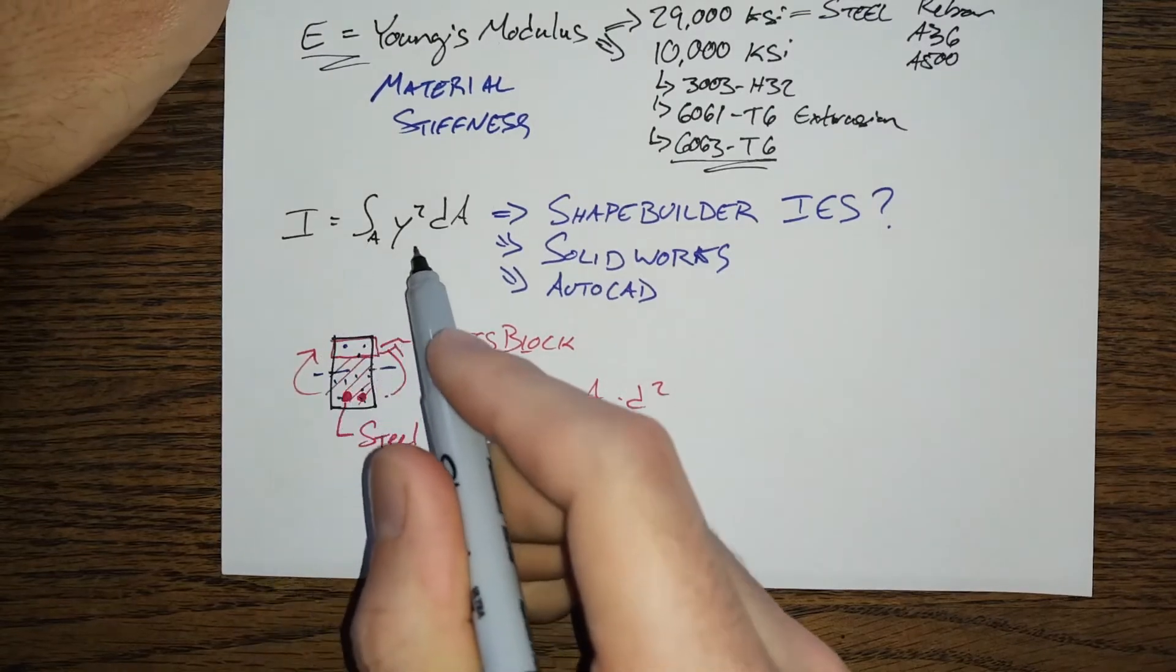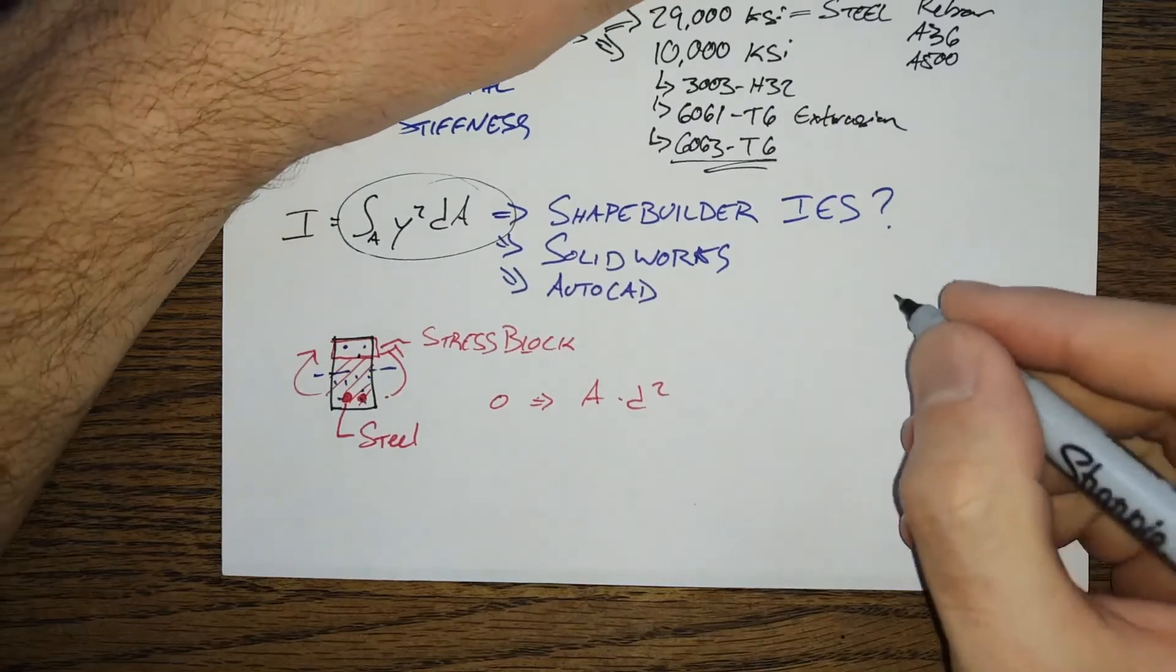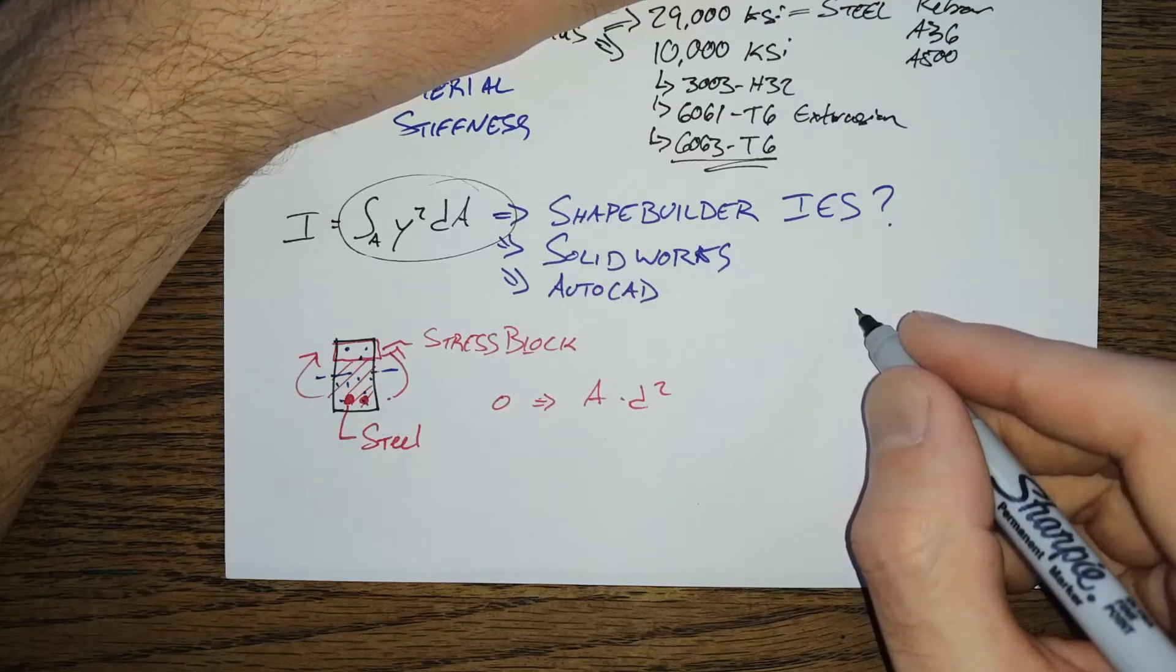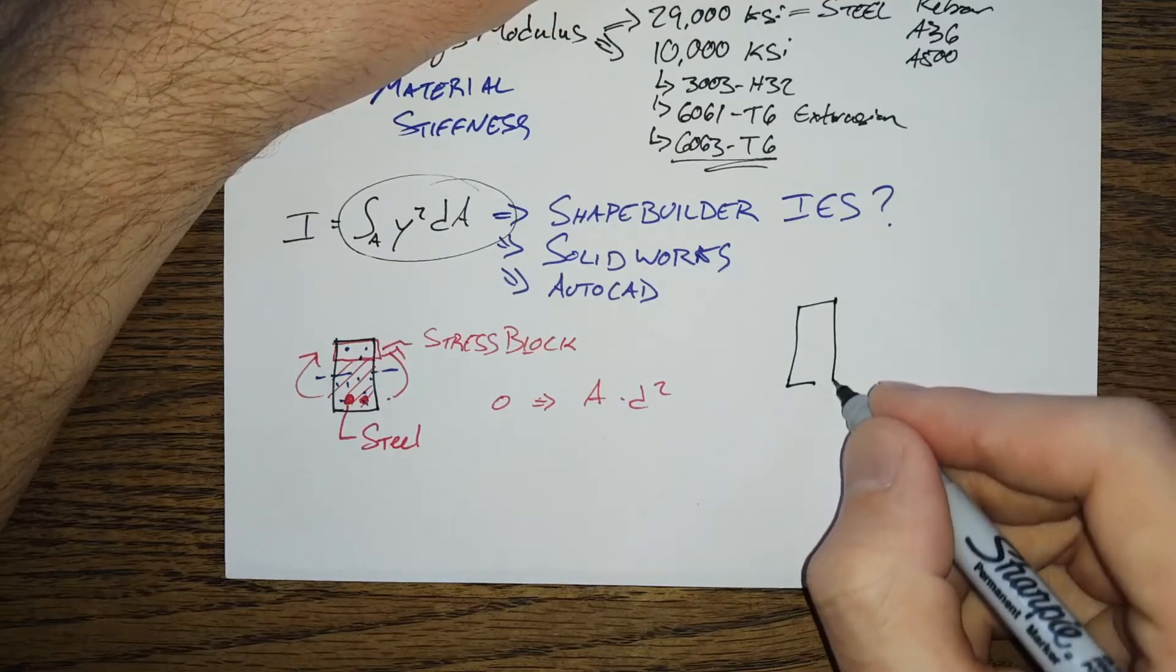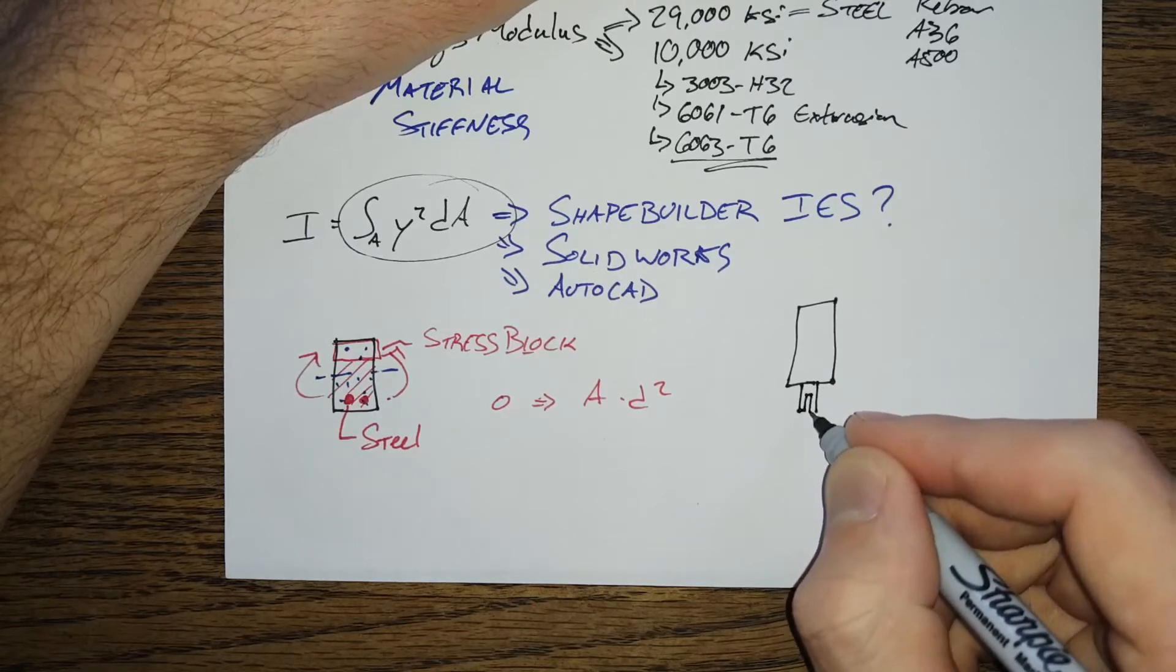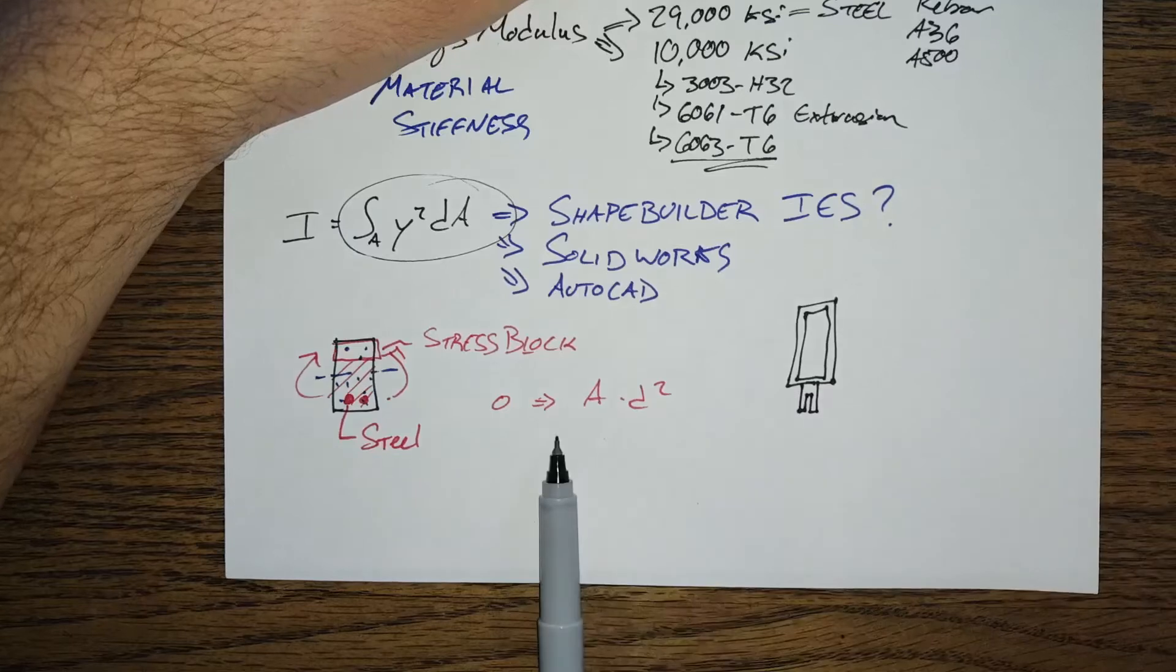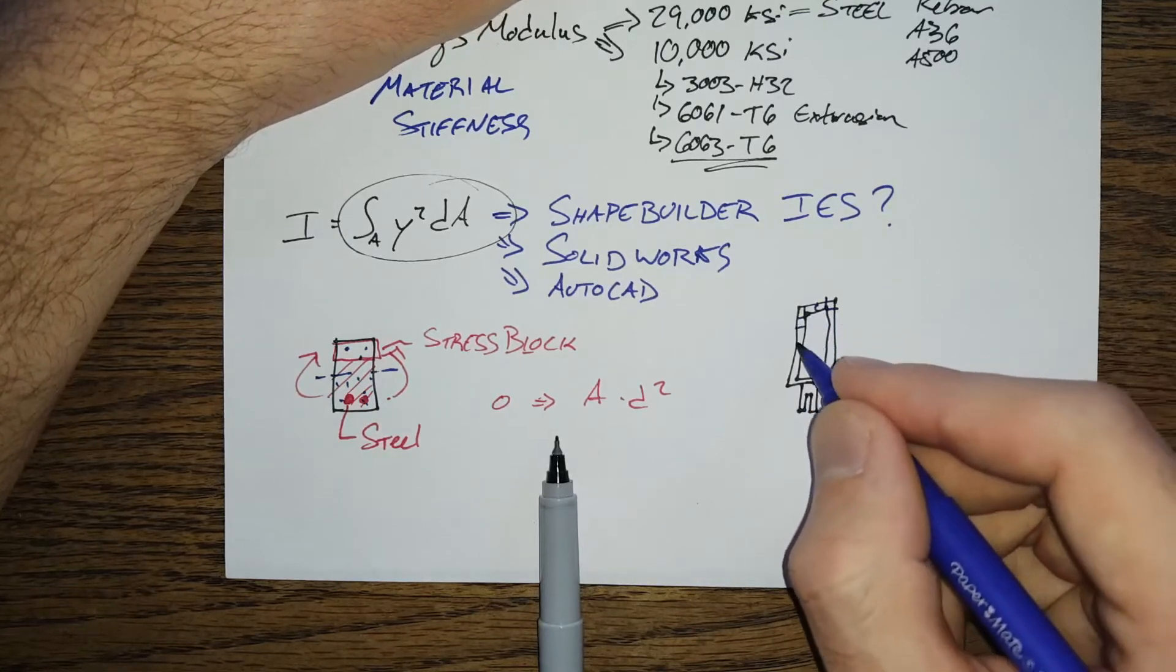So don't try to work this formula by hand. What you can do, and what used to get done around my office before I was around, back before computers were widespread, we frequently work with very oddly shaped sections in the curtain wall industry. Some nice stick built stuff kind of looks like this, where you've got a rectangular tube and you've got this little tongue and this little rectangle.